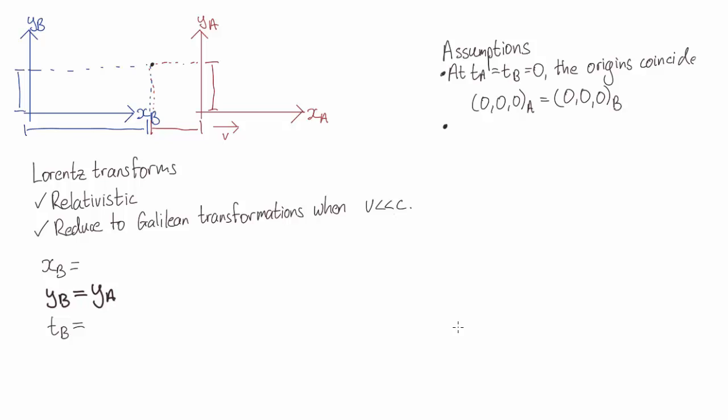The second assumption we're going to make is that the transformations are what we call linear. That is, xb depends on xa and ta, but not xa squared or xa times ta or anything else like that. So in that case, what is the most general linear transformation between these frames?